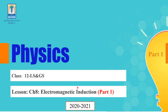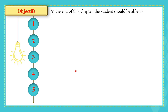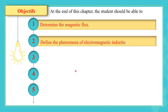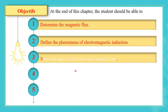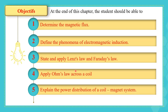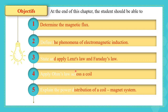Salam alaikum. In this series of videos we are going to talk about Chapter 8: Electromagnetic Induction, which is the first chapter of the second unit, Electricity. At the end of this chapter we are going to be able to determine the magnetic flux, define the phenomenon of electromagnetic induction, state and apply Lenz's law and Faraday's law, apply Ohm's law across a coil, and explain the power distribution of a coil-magnet system.